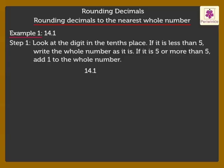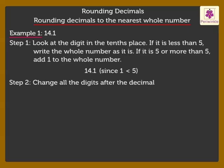Here, the digit in the tenths place is 1, which we know is less than 5. So, we write the whole number, 14, as it is. Step 2: Change all the digits after the decimal point to 0. So, the rounded number is 14.0.